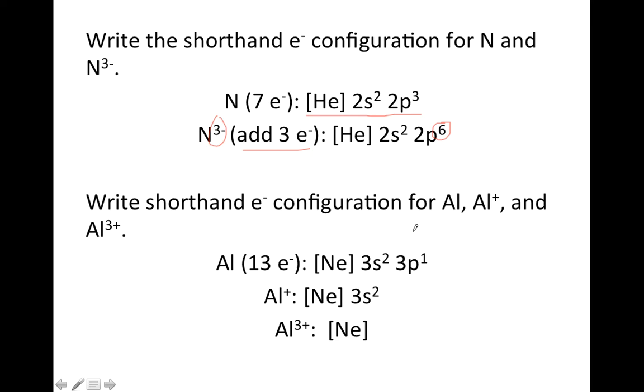And then down below, write the shorthand electron configuration for Al neutral, Al⁺, and Al³⁺. So aluminum has 13 electrons. Here's the neutral aluminum atom's configuration.